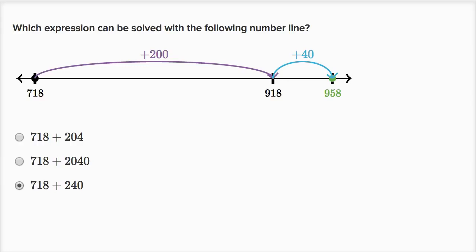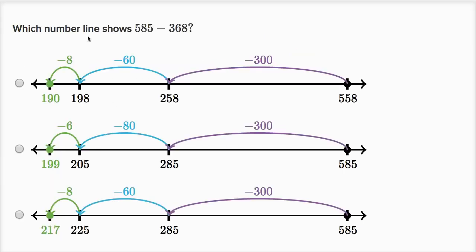This is kind of strangely fun. Which number line shows 585 minus 368?